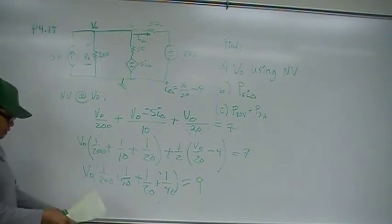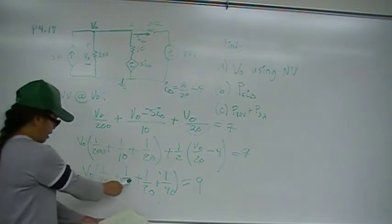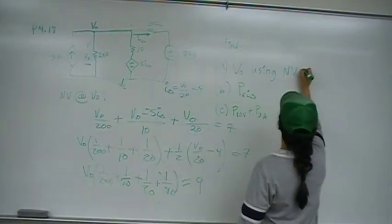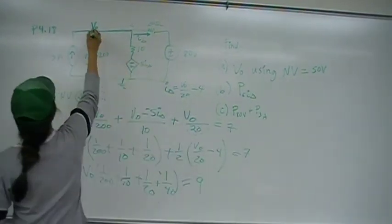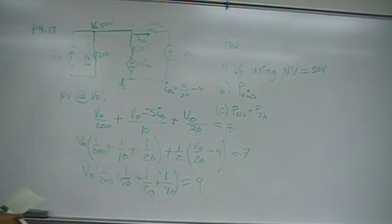And once you solve for that in your calculator, you should, and let me just make sure I didn't make any mistakes, 1 over 200, 1 over 10, 1 over 20, 1 over 40. Yes, so once you solve that in your calculator, you'll come up with V out is equal to 50 volts. So now we know it's 50 volts here.